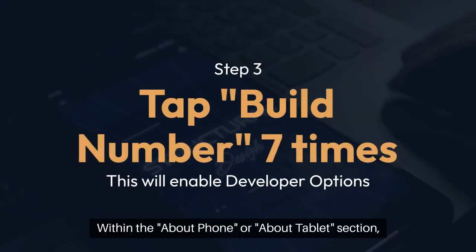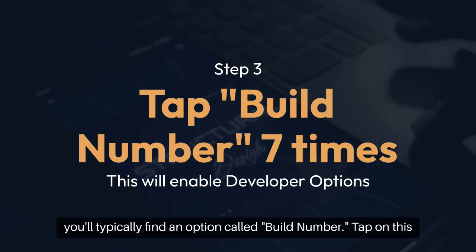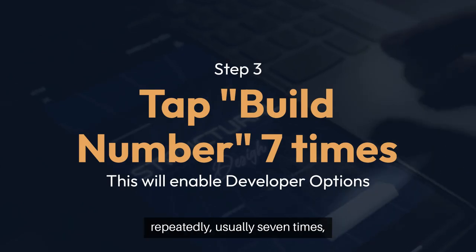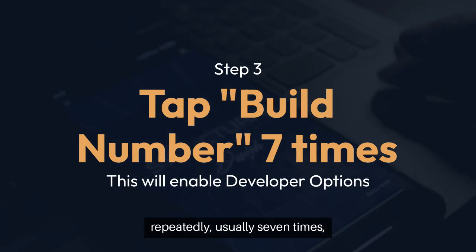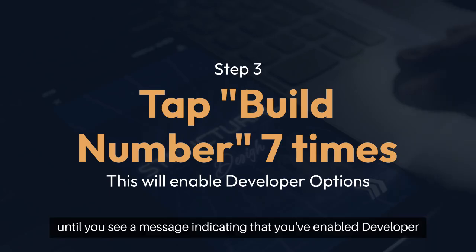Within the About Phone or About Tablet section, you'll typically find an option called Build Number. Tap on this repeatedly, usually seven times, until you see a message indicating that you've enabled developer options.